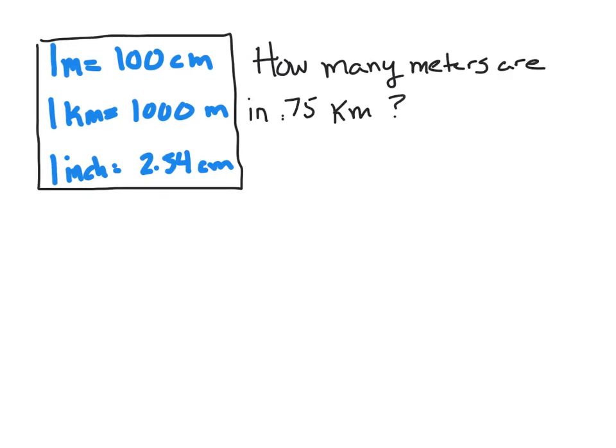We're going to work a problem here where we want to know how many meters are in .75 kilometers. The first thing we want to do is start with our given value, .75 kilometers. We're going to set that up as a fraction and put our multiplication, and we know we need another fraction here. That means .75 over 1. I don't need a unit right here. It's just .75 over 1.